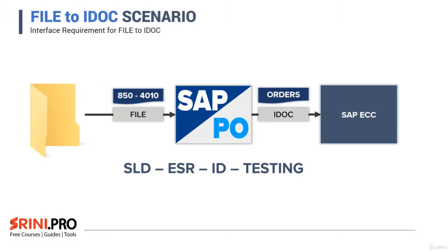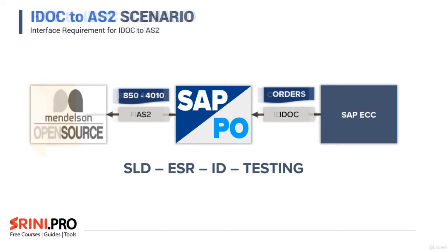Next, we will replace the Mendelssohn AS2 with a file adapter, wherein we will drop the EDI file in an FTP folder and use the same interface to pick the file and process the message into an IDOC. In the IDOC to AS2 scenario, we will trigger an Orders IDOC from SAP ECC, convert it into an 850 EDI file, and send the file to the MECH AS2 software. You will learn how to configure Mendelssohn software to receive the message and how to configure your channel to send it. The configuration section covers SLD, ESR, ID, and end-to-end testing from ECC to Mendelssohn software.